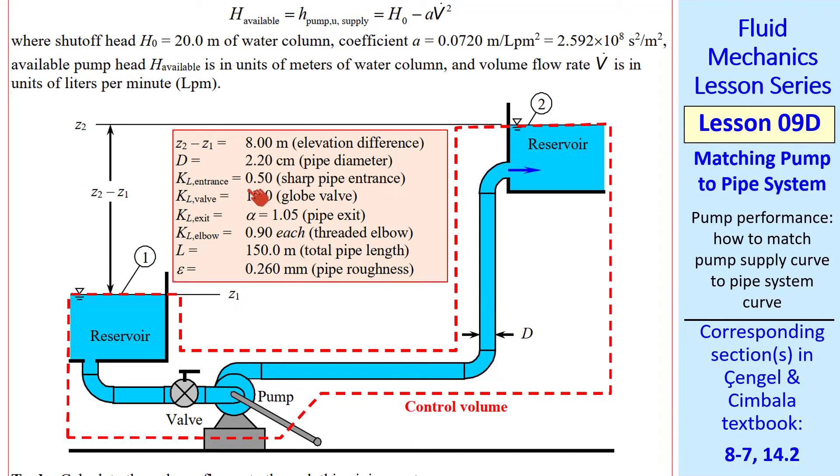All the data are given here: elevation difference, pipe diameter, the minor losses. Notice that since the jet from this outlet lies within our control volume, we count KL exit. Since this is turbulent flow, we use alpha equal 1.05. We look up KL for the elbows, 0.90 each, and there are three of them. We give the total length and the pipe roughness. This is cast iron pipe for which we can look up the pipe roughness.